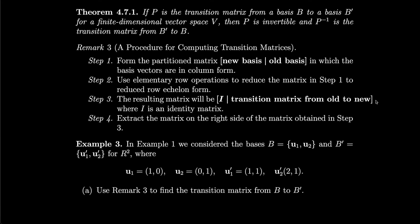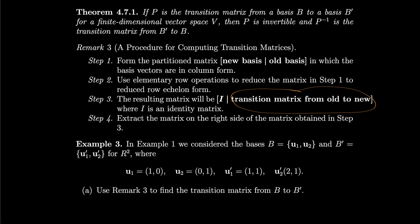If P is the transition matrix from a basis B to a basis B prime for a finite dimensional vector space V, then P is invertible and P inverse is the transition matrix from B prime back to B. We also have a procedure for computing transition matrices: form the partitioned matrix where the left part is the new basis and the right part is the old basis, with basis vectors in column form. Then use elementary row operations to reduce the left part to the identity matrix. The resulting right part will be the transition matrix from old to new.